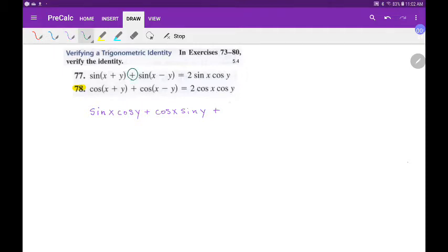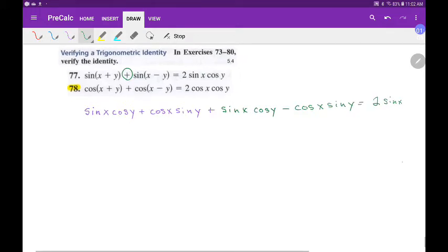And then I'm doing it in green. After this, sine of x cosine of y minus the cosine of x times the sine of y, based on the identity that we know. And then we're supposed to get two times sine x cosine y.